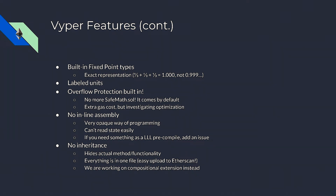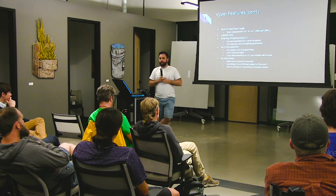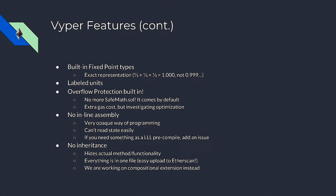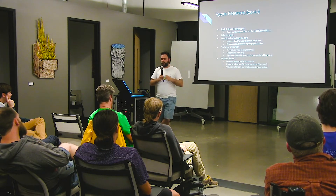We allow labeled units, so you can apply arbitrary units to different functions. We have a built-in one for wei, so you can know the difference between a regular integer and one that is specifically handling ether. It'll actually throw a compiler error when you go to compile, which is pretty useful. You can also add your own custom labels, so if you have a stock type or something like that, you don't mix values with other types. We build overflow protection directly into the compiler, so every mathematical function in Viper uses safe math by default — you can't overflow or underflow. It does add a little extra gas cost, but we're investigating optimization strategies where we can prove it's unnecessary for certain classes of logic.